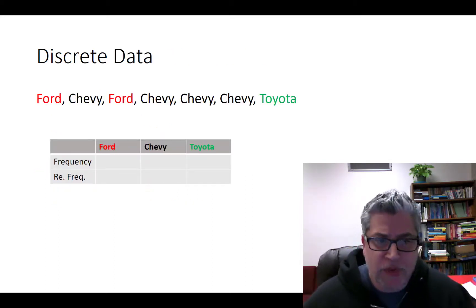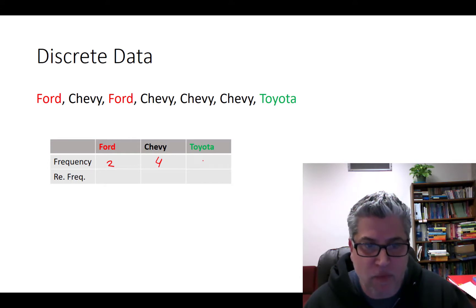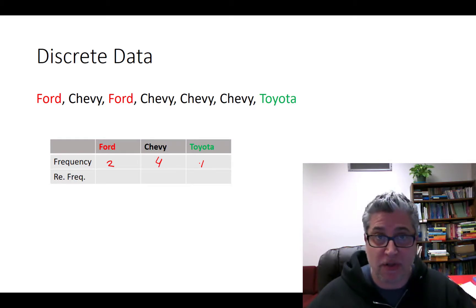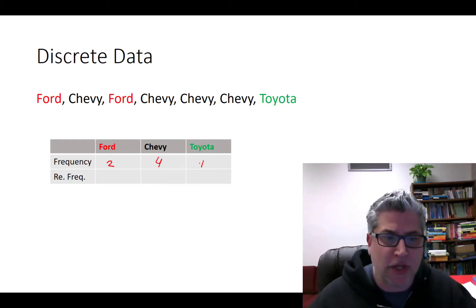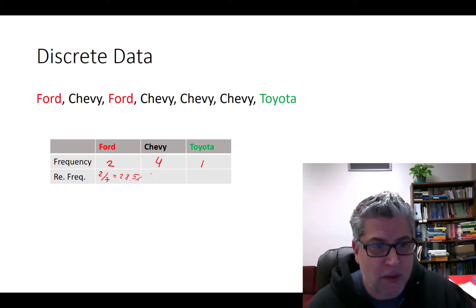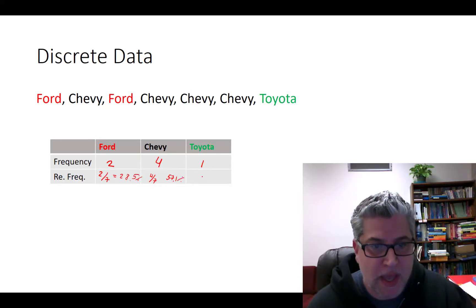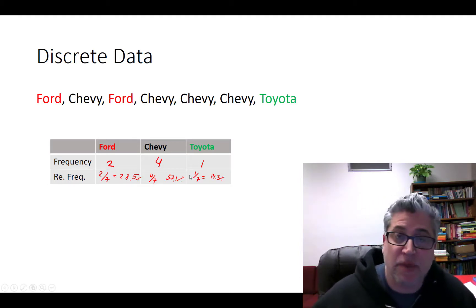So let's fill in this table. We just need to count how many of these cars are Fords — there are clearly two of those. We've got four Chevys and one Toyota. That's just the frequency of our discrete data. Now, what is the relative frequency? That means what percent of our observations fall under each category. We've got seven cars total, so two out of seven were Fords — that's 28.5%. Four out of seven were Chevys — that's 57.1%. And one out of seven is 14.3%.